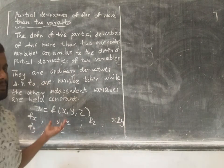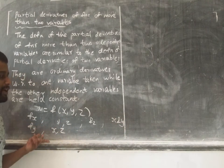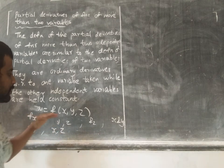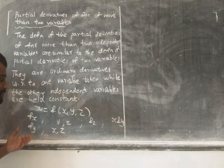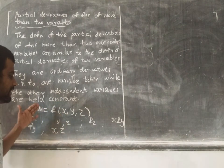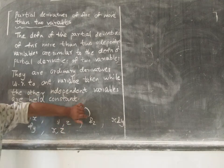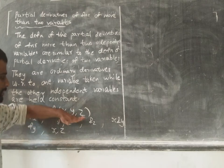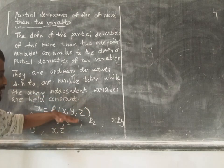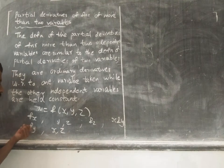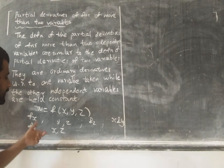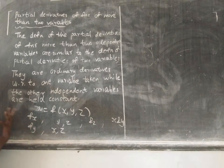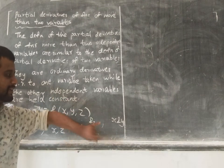Now if we have a function, the partial value with respect to x holds y and z constant. Partial value with respect to y holds x and z constant. If you have the independent variables, you can see the independent variables. So a partial derivative with respect to x and q, y and z, with the others held constant. The partial derivative f_y is equal to the derivative with respect to y holding x and z constant.